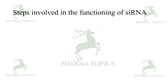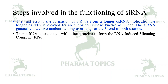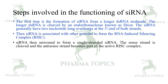The first step in siRNA functioning is the formation of siRNA from a longer double-stranded RNA molecule. The longer double-stranded RNA is cleaved by an endoribonuclease known as Dicer. The siRNA generally has two-nucleotide-long overhangs at the 3-prime end of both strands. The siRNA then associates with other proteins to form the RNA-induced silencing complex, or RISC.